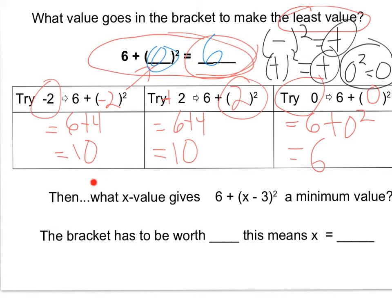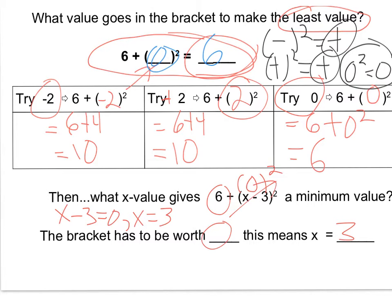Now, what x value gives 6 plus (x minus 3) squared a minimum value? I need to make that bracket 0. How do I make that bracket worth 0? It has to be x minus 3 equals 0, so x equals 3. The bracket has to be worth 0, and this means x equals 3. If this is 0, then I'm left with 6 — I have 6 left over. The lowest that squaring amount can ever be is 0, and it occurs when x equals 3.